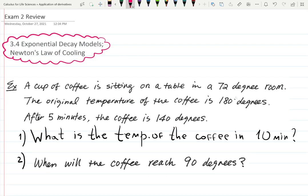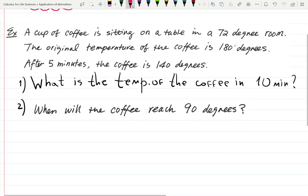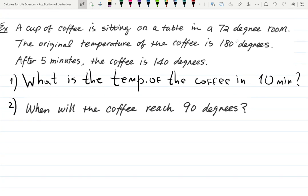This is the beginning of our review of section 3.4, exponential decay models. Let's review Newton's Law of Cooling. We did one problem on Monday — let's do one more. A cup of coffee is sitting on a table; room temperature is 72 degrees, coffee is hot at 180 degrees. After five minutes it's 140 degrees. The question is whether to wait 10 minutes — maybe your teeth are sensitive after a dentist visit.